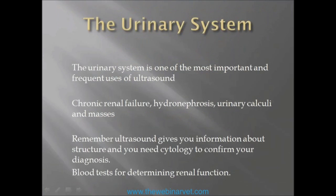So why are we doing the urinary system? Well, it's one of the most important and frequent uses of ultrasound. It's one of the main things people go for when they first start off, and most people think finding the kidneys is quite easy. We look for it for chronic renal failure, hydronephrosis, urinary calculi, bladder masses, TCCs and the like. The important thing to remember is ultrasound gives you information about structure. Blood tests give you information about renal function, and when it comes to making a diagnosis — for example, a renal mass — you need to do your cytology to confirm your diagnosis.